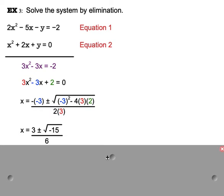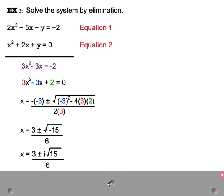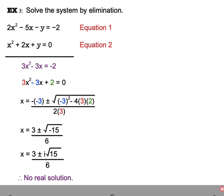I simplify. 9, 4 times 3 is 12, times 2 is 24. So, 9 minus 24 is negative 15. Once again, I have an imaginary. Since I have an imaginary, there's no real solution to this math problem.